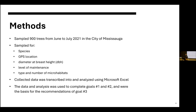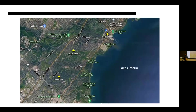The collected data was transcribed and analyzed using Microsoft Excel, and the data analysis was used to complete goals one and two, which guided goal number three. This map shows the general area that I sampled in. The three gold stars — Clarkson, Lauren Park, and Port Credit — were the three general neighborhoods I sampled in, primarily because these were older neighborhoods where we were expecting to find trees of larger DBH. The sampling covered the entire area underneath the QEW down to Lake Ontario.